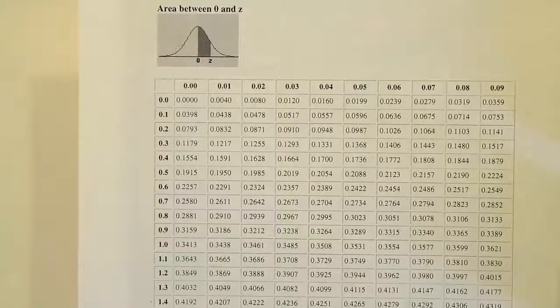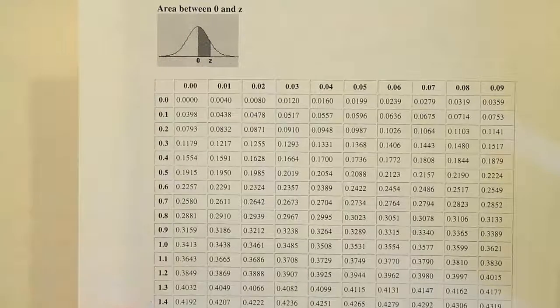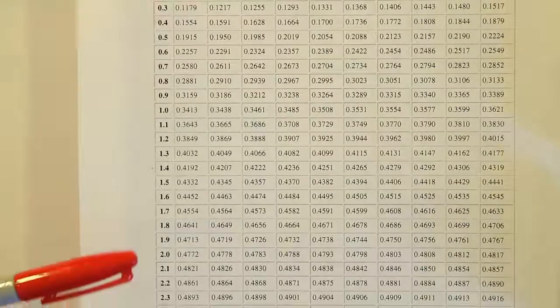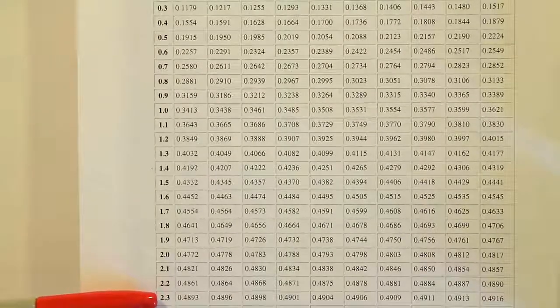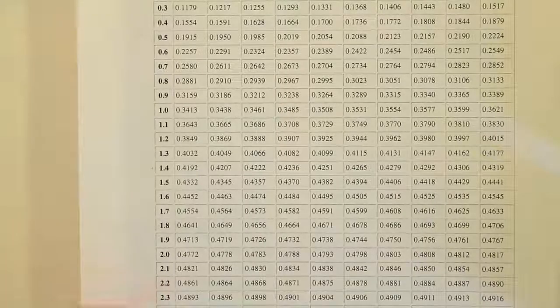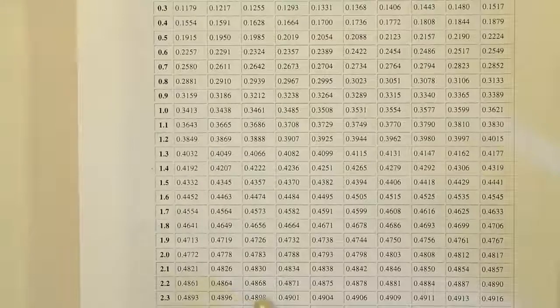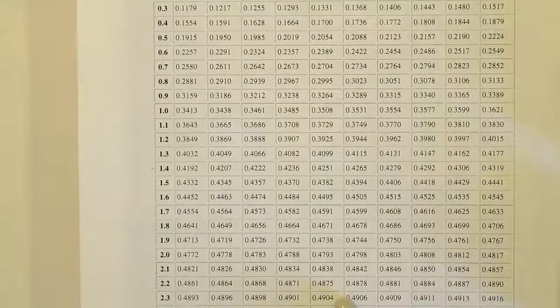We're looking at the z-score 2.34, so we're going to need to find 2.3 first in this column. We see the 2.3 row here at the very bottom of the table. We're going to go over to the fifth position where we find 2.34 because the first position is 2.30, 2.31, 2.32, 2.33, 2.34. And we find the answer 0.4904.